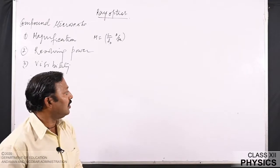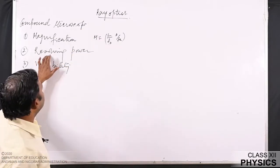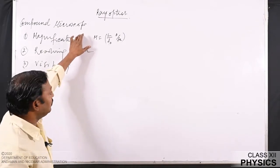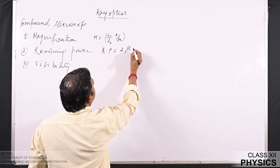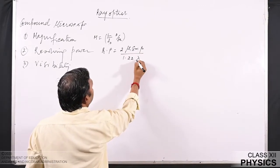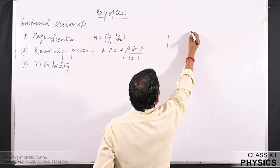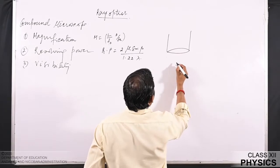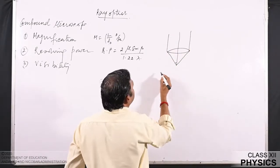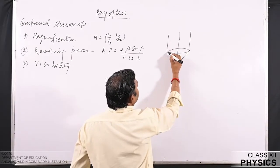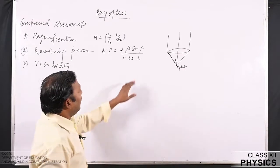By showing the separation between two nearest objects we can distinguish them, and such a microscope will be better. The formula for the resolving power of a compound microscope is: Rp = 2μ sinβ / 1.22λ, where μ is the refractive index, β is the half-angle of the cone of light from the object, and λ is the wavelength of light used.